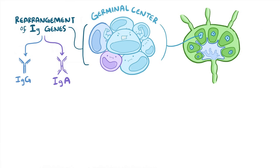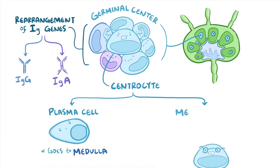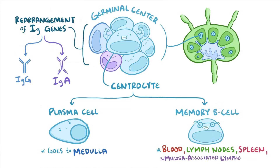These proliferating centroblasts form a germinal center found in the center of a follicle of the lymph node. These centroblasts have a rearrangement of their immunoglobulin genes, and some undergo a class switch where they change from producing IgM antibodies to producing IgG or IgA antibodies. Within the germinal center, centroblasts mature into centrocytes, and the centrocytes that make high-affinity antibody differentiate into either plasma cells or memory B cells, which circulate in the blood and reside in the lymph nodes, spleen, and mucosa-associated lymphoid tissue, also called MALT.